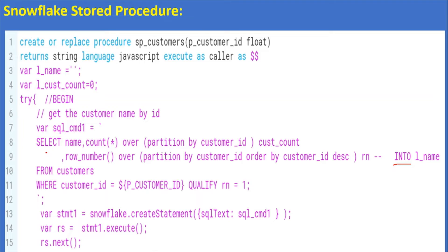Instead of checking afterwards, while retrieving the data from the table itself we are going to take only one customer, even if there is more than one customer ID. Along with the customer ID we are going to capture the number of rows present for that customer ID — that is, how many duplicate values are there. For example: SELECT name, COUNT(*) OVER (PARTITION BY customer_id) as cust_count. If customer ID 1 is present two times, then cust_count will have the value two.